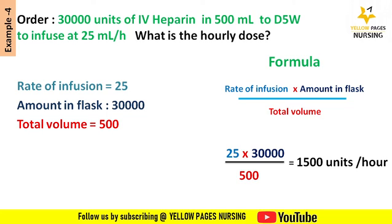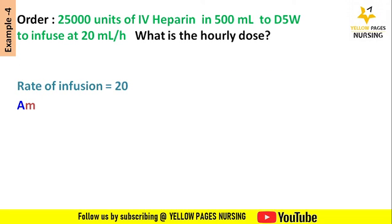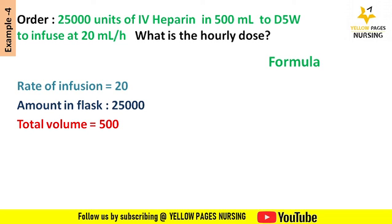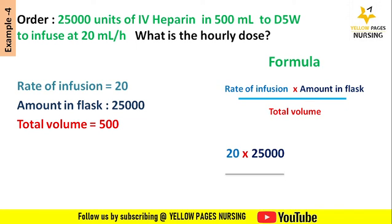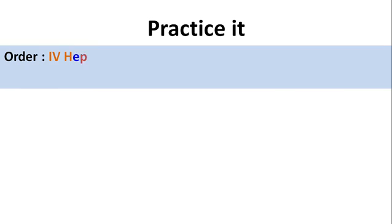Applying all into the formula — rate of infusion multiplied by amount in flask, divided by total volume — we get the answer 1,500 units per hour. The next example: doctor's order is 25,000 units of IV heparin in 500 ml D5 water to infuse at 20 ml per hour. What is the hourly dose? Rate of infusion is 20, amount in flask is 25,000, total volume is 500. Applying into the formula we get the answer 1,000 units per hour.